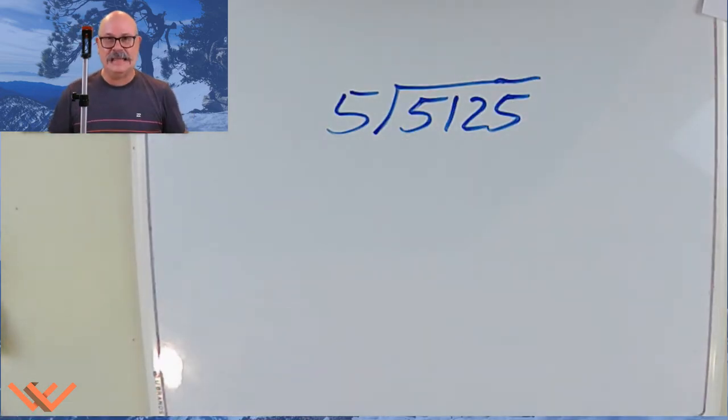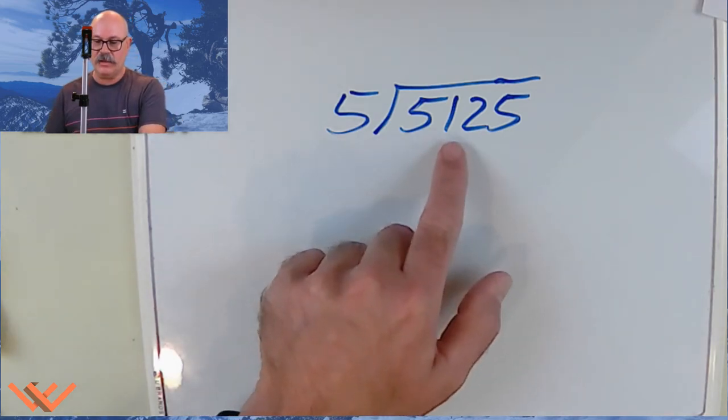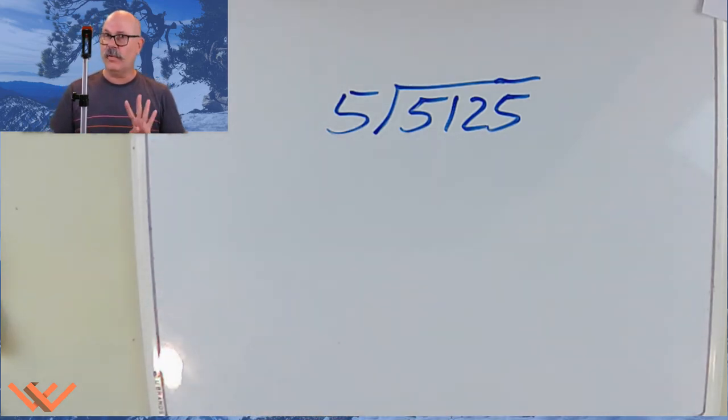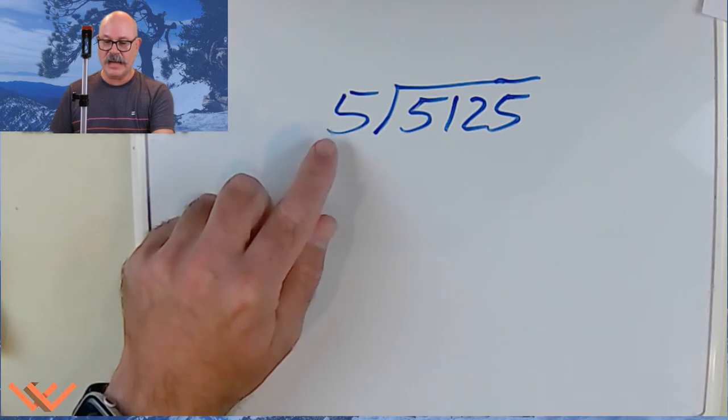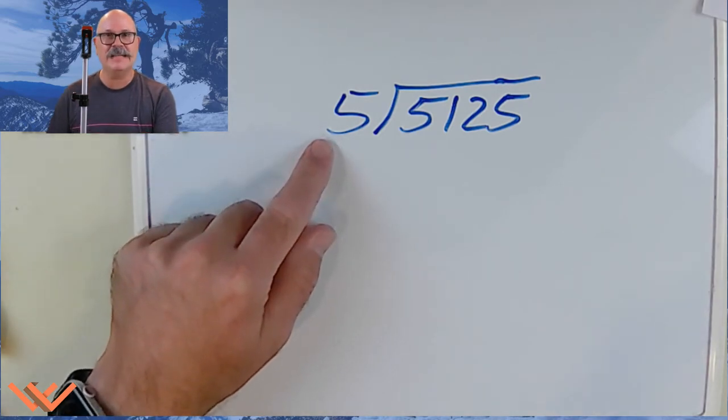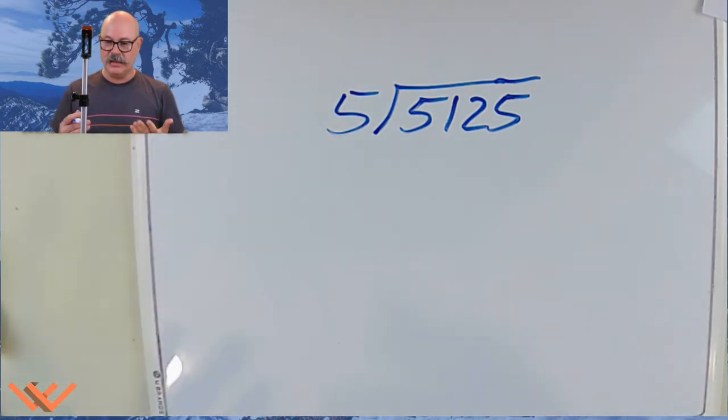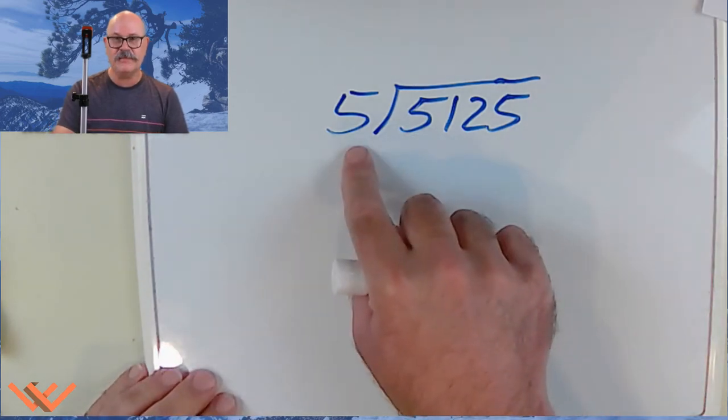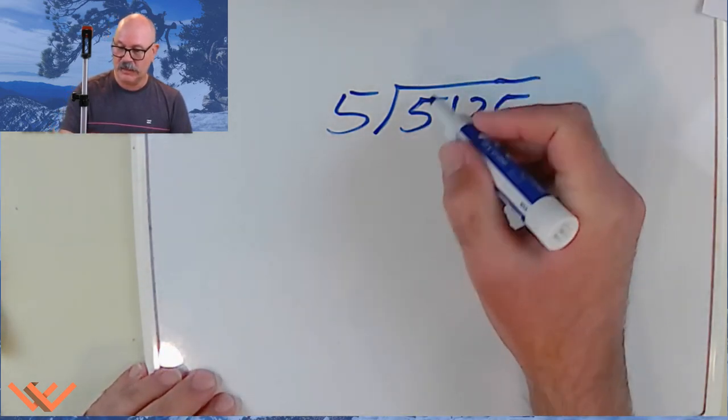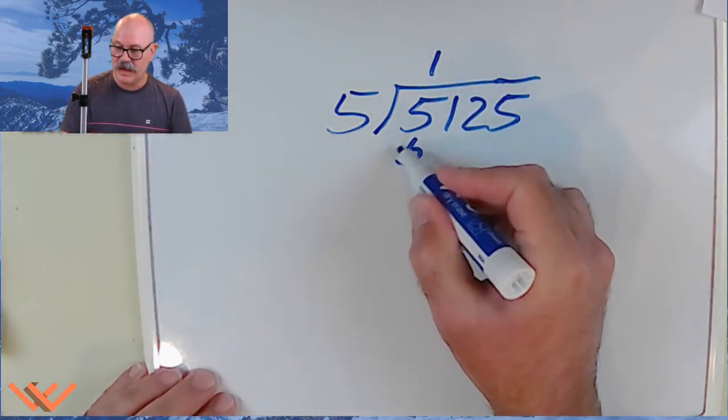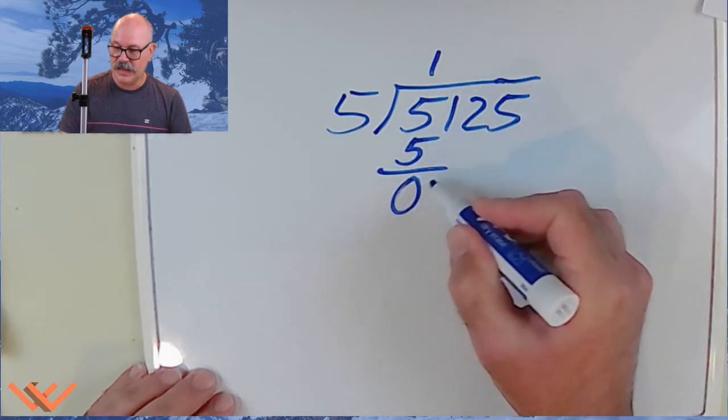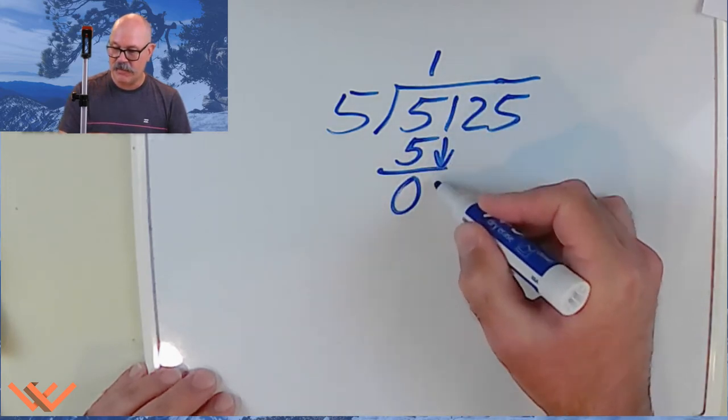Okay. Now, our dividend, which is this 5,125, that's a four digit number divided by the divisor of five, a single digit number. Let's go to town. So how many fives go into five? There we go. Well, one times five is five. I zero that out.